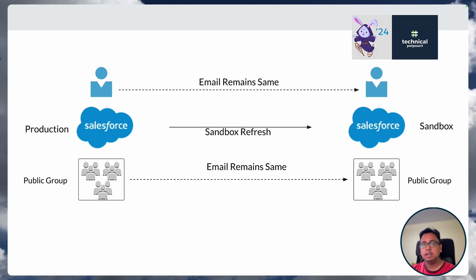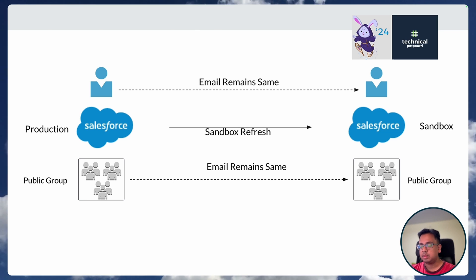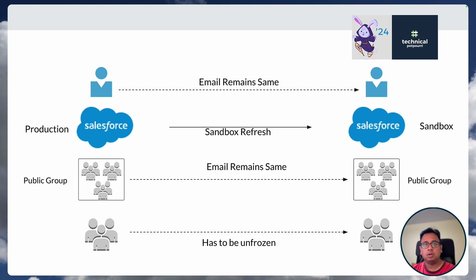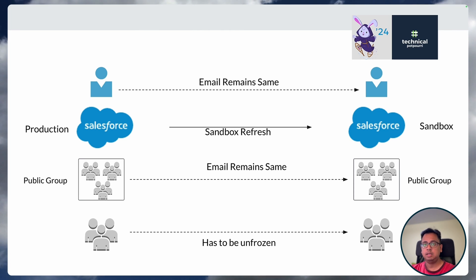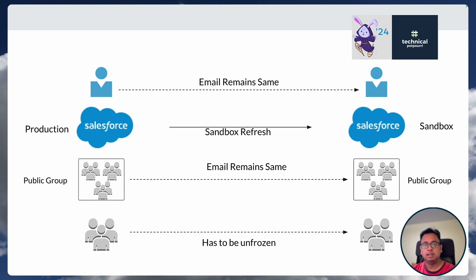The beauty is that their email will remain the same — it will not be appended with dot invalid, just like the person who initiated the refresh. What will happen to the remaining 90 people in your org who are not part of the public group? They will still be there in the sandbox, but their account will be frozen. If you know in advance that only certain people need access to your new sandbox, put them in a public group and whoever is inside the public group will automatically get access.